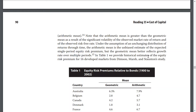Under the assumptions of an unchanging distribution of returns through time, the arithmetic mean is the unbiased estimate of the expected single-period equity risk premium, but the geometric mean better reflects growth rates over multiple periods. In Table 1, we provide historical estimates of the equity risk premiums of 16 developed markets from Dimson, Marsh, and Staunton's study.